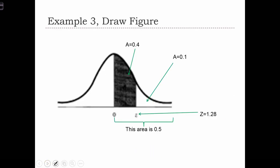Going back to our image now, we see that this z-score over here is 1.28, because that gives us 40% in this area and 10% over here.